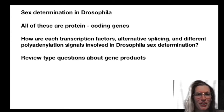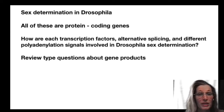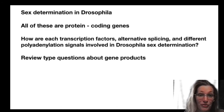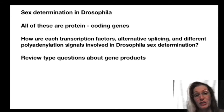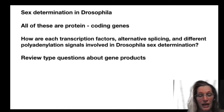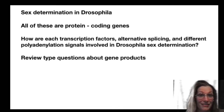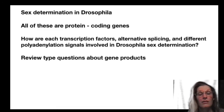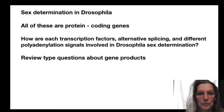Sex determination in Drosophila is one of the coolest real-life examples. This really happens every day in all those little fruit flies buzzing around your fruit, determining whether they are going to be the sperm parent or the egg parent — what their scientific sex is going to be. It's just so cool.